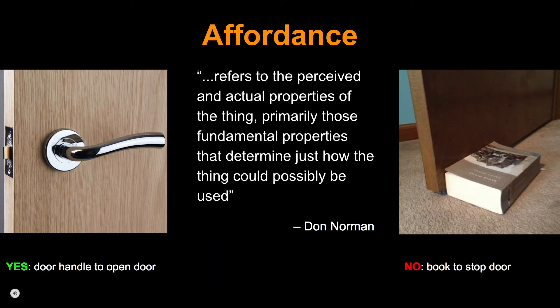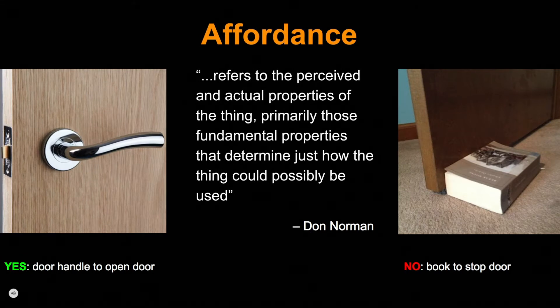According to Don Norman, the affordance of a thing refers to the perceived and actual properties of the thing — primarily those fundamental properties that determine just how the thing could possibly be used. A door handle to open doors is a positive example of an affordance because its function can be readily perceived. A book to stop a door, on the other hand, is not an affordance — while one can use a book as a doorstop, this is not a readily perceived property.